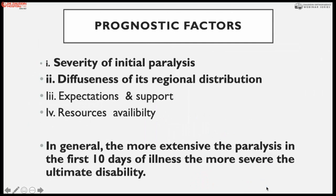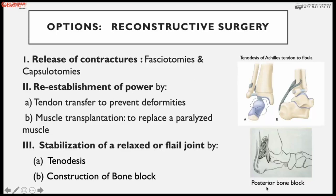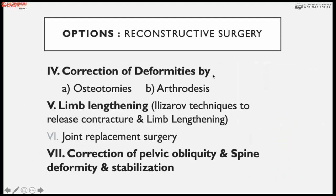Multiple prognostic factors must be known before surgery: severity of initial paralysis, diffuseness of regional distribution, patient's and parents' expectations, social support, and resource availability. In general, the more extensive the paralysis in the first few days of illness, the more severe the ultimate disability. Reconstructive surgery options include fasciotomies, capsulotomies, tendon transfers, muscle transpositions, and joint stabilization.